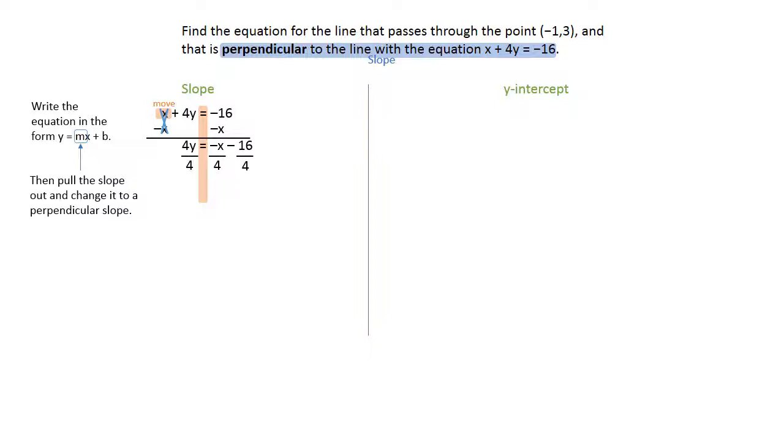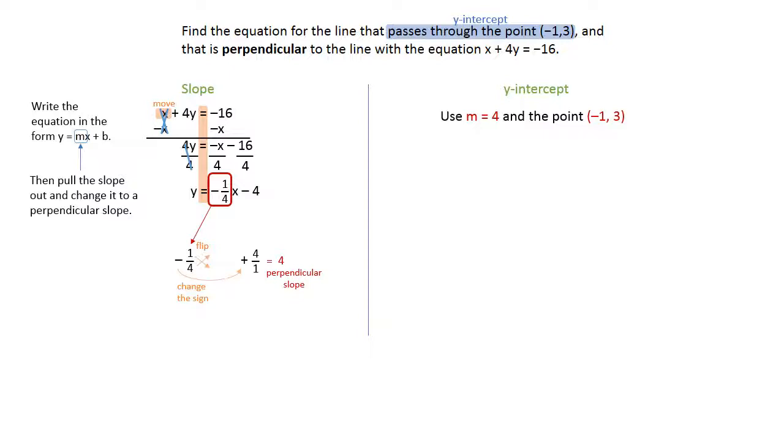Divide all 3 places to eliminate the 4 on the left-hand side. That leaves you with y equals negative 1/4 x minus 4, and we did that so that we could pull the 1/4 out and find a perpendicular slope. We will need to flip it and change the sign, and that will give us a positive 4 for the perpendicular slope.